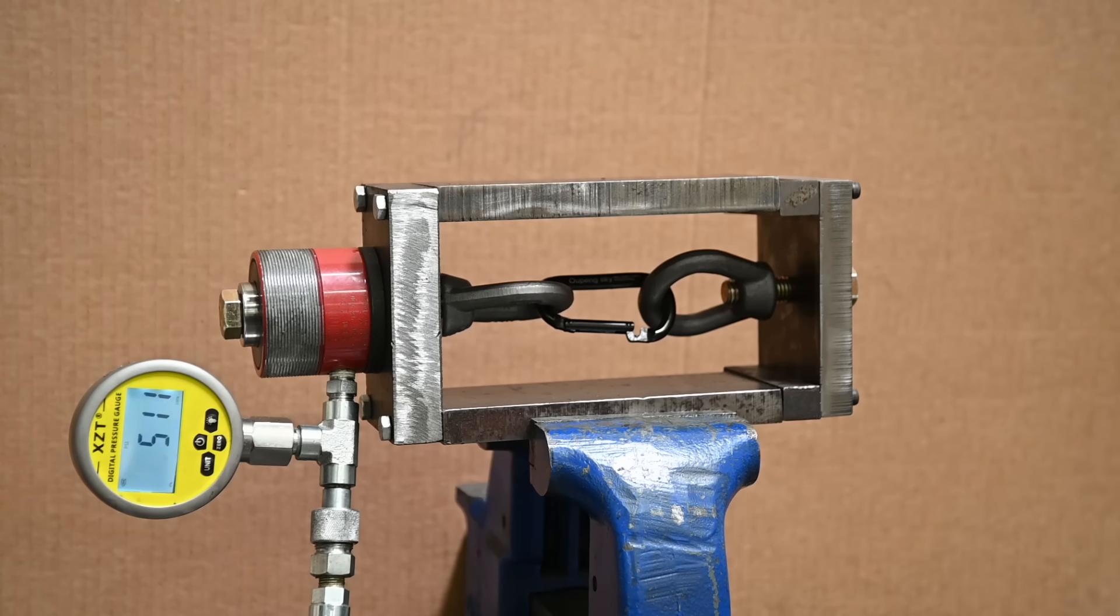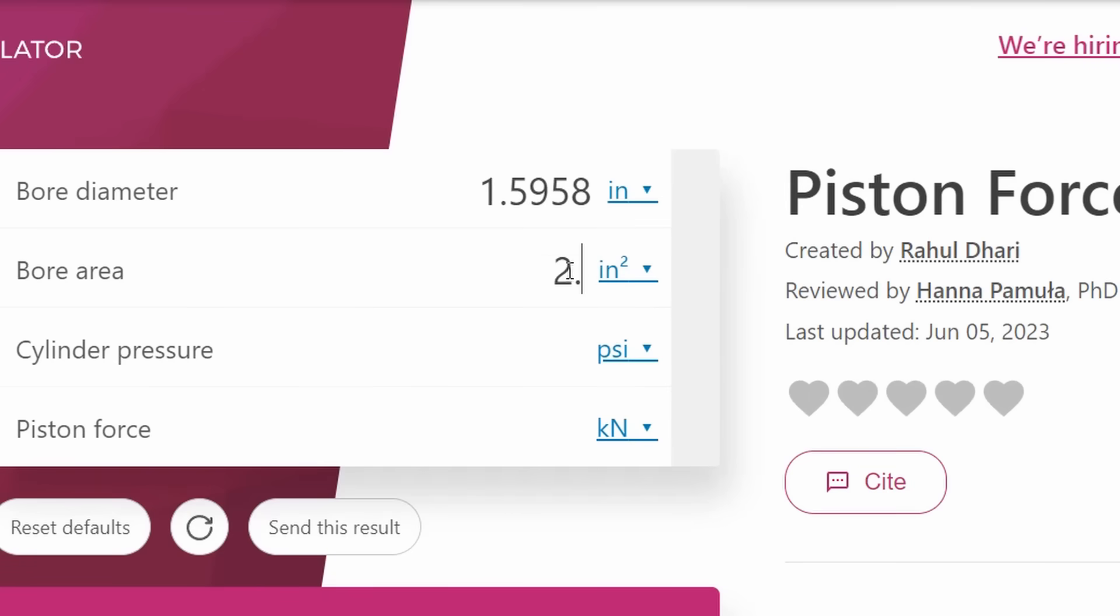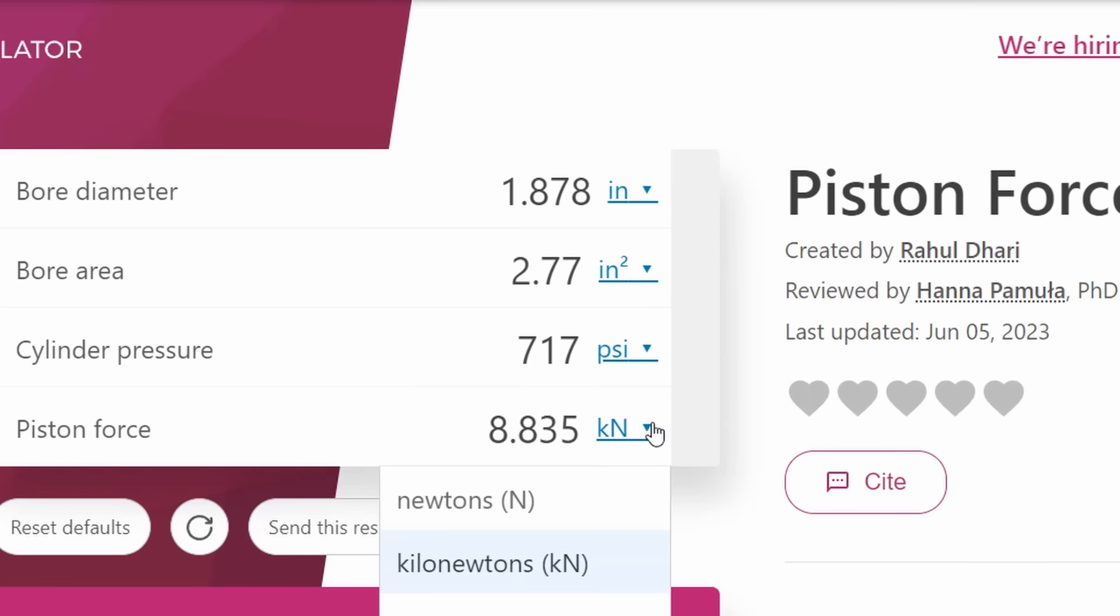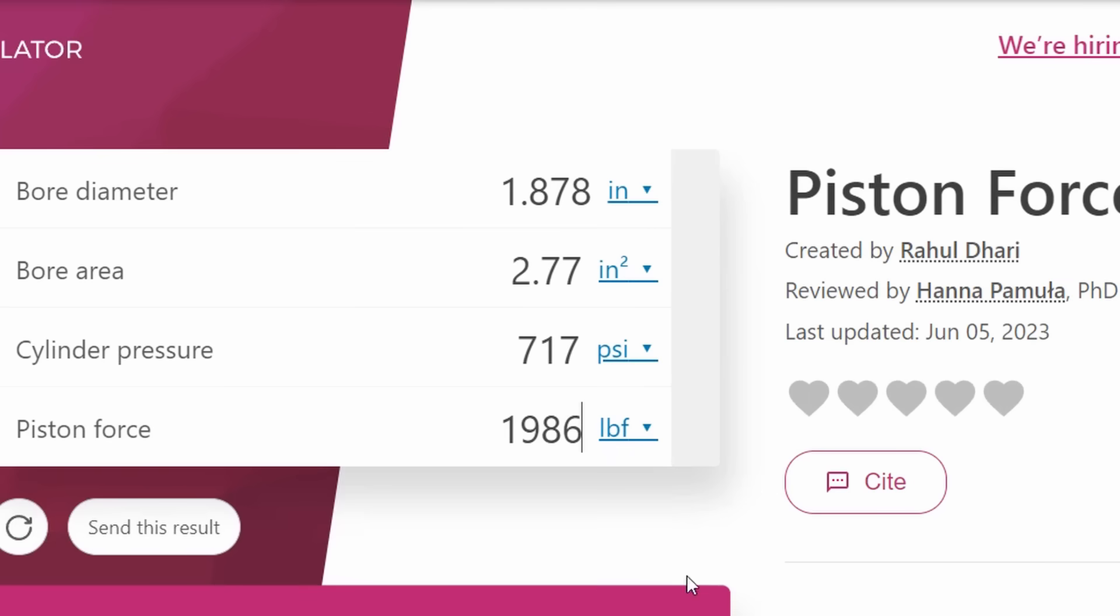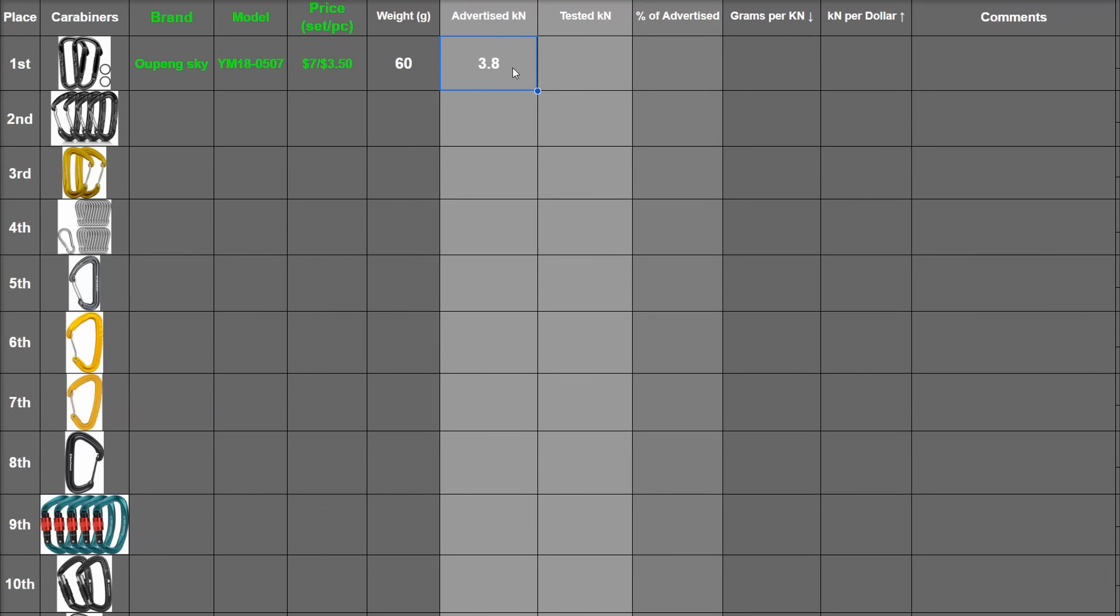Just a pop and no high speed footage here. But that peaked at 717 psi, which means nothing to us either yet, don't worry. But by using the hydraulics calculator and plugging in our bore surface area that comes out to 8.84 kilonewtons, nice. And for us laymen, that's around 2,000 pounds for something claiming it can hold 855 pounds force max static load along the length, 233% over advertised.